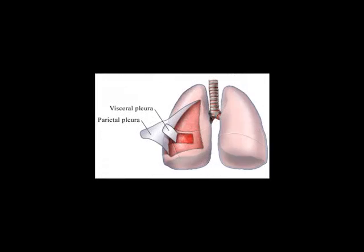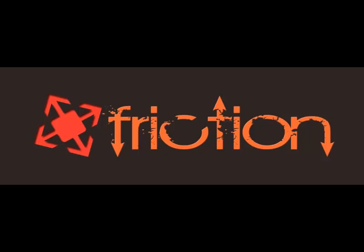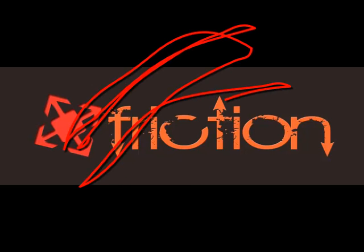The lungs are covered with the pleura, the pleural membranes. The layer that sticks to the surface of the lung — the inner layer — is called the visceral pleura. The outer layer is called the parietal pleura. What's in the middle? Pleural fluid. What's the purpose of the pleural fluid? To prevent friction.